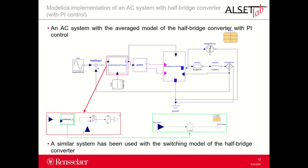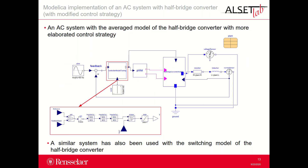The same AC system with the average model of the half-bridge converter but with PI control is indicated in this slide. Detailed views of the control block are also provided, showing how the records have been used to set the parameter values of the PI. Finally, the AC system with the average model of the half-bridge converter but with a more elaborated control strategy is given here. The control block includes a gain and three blocks of transfer functions corresponding to a lead compensator, a lag compensator, and a resonant control. These modifications of the controller have been introduced because with only a PI controller, it is not possible to track a sinusoidal reference without error — only a step reference signal. This can be clearly seen in the slides of the simulation results.